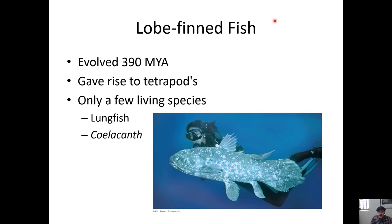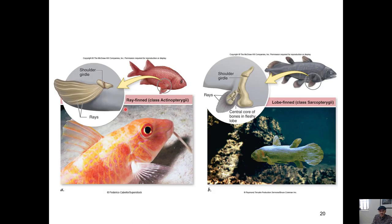They evolved a little bit later than the ray-finned fish. I recommend you take a geologic time scale — print one off the internet or use one from your book — and put the order that these things appear on that time scale, noting the big time periods like Precambrian, Paleozoic, and Mesozoic. This group gave rise to tetrapods, though there are only a few living species today, including the coelacanth and lungfish.